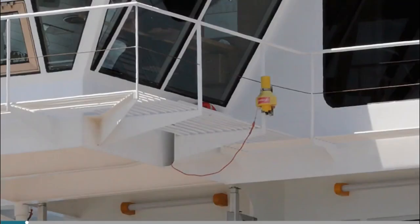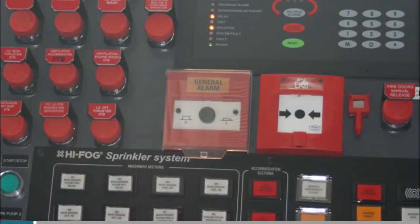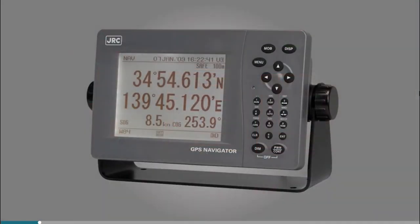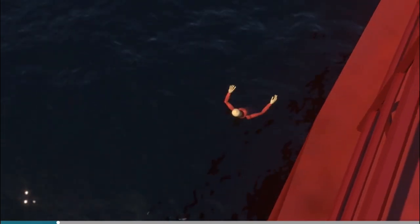The duty officer on the bridge will then release the man overboard buoy and sound the general alarm. Many GPS units have a man overboard button which will store the position at which the button was pressed. But try to keep the person in sight so you can find them again if they drift away from the position.